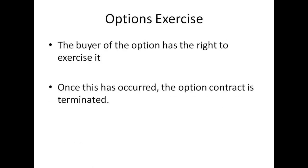The buyer of the option is the only one who can exercise. They have the right to exercise, and once they do the contract is terminated. With a European option they can only exercise at expiration; with an American option they can exercise early. Once exercised, delivery is made and the options contract disappears — it's no longer valid.